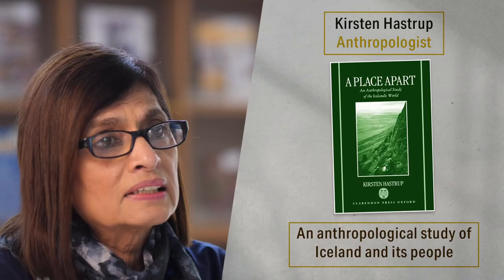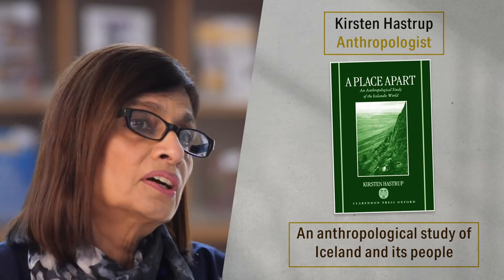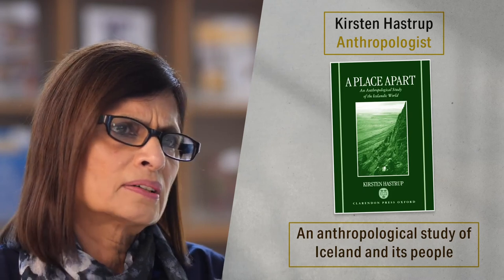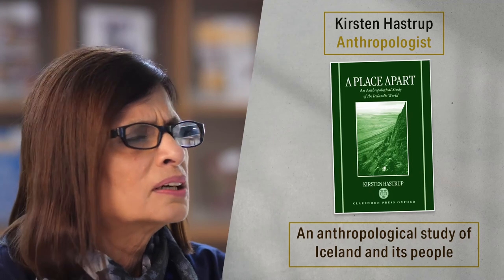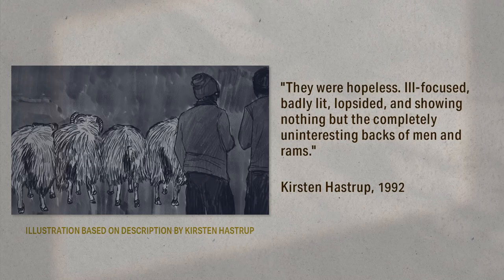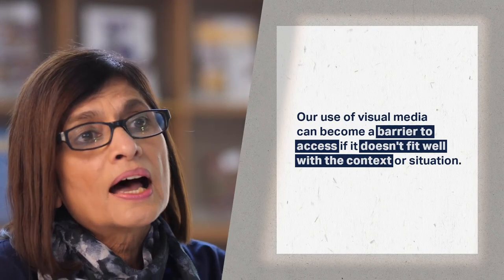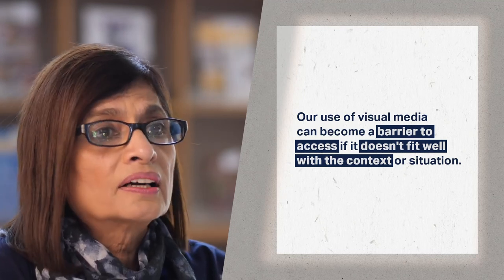However, if the camera is uncommon in the context or makes participants uncomfortable, it can create additional challenges in our attempts to gain access. This is something anthropologist Kirsten Hastrup discovered during her fieldwork in Iceland. Hastrup was studying an Icelandic sheep market, which is usually attended only by men. Uncertain about her own presence and the presence of a camera in a gathering from which women were otherwise excluded, the pictures she made failed to convey the essence and meanings of the phenomena — instead showing completely uninteresting backs of men and rams. Hastrup interpreted the poor quality of the images as a reflection of the inhibitions she felt in going against these established norms.